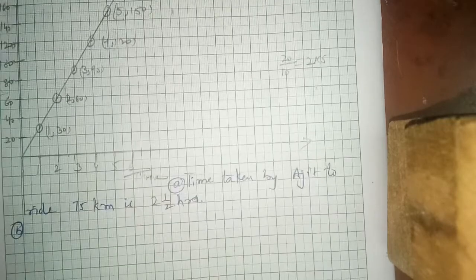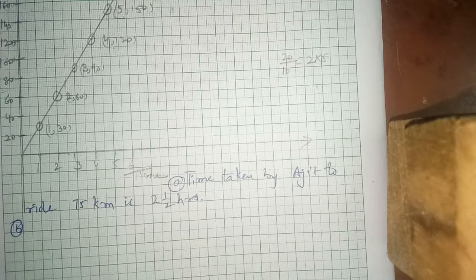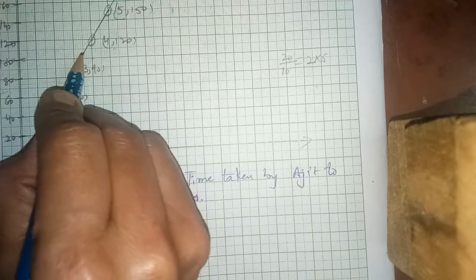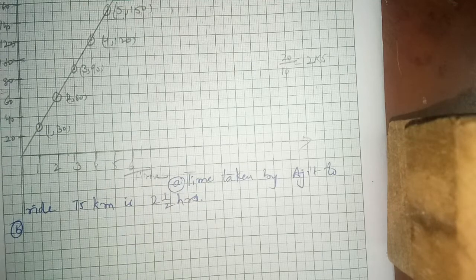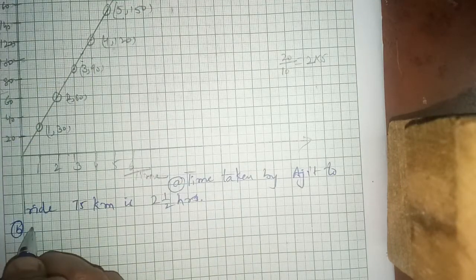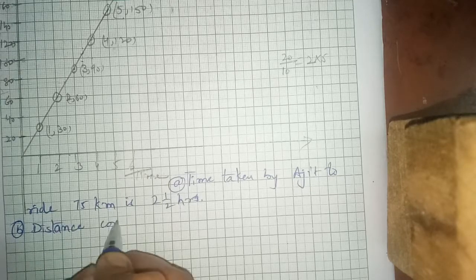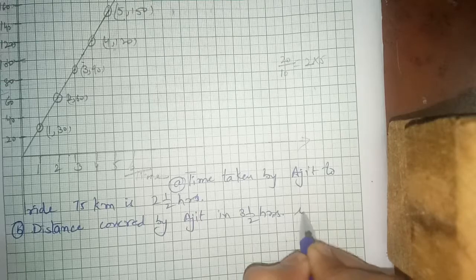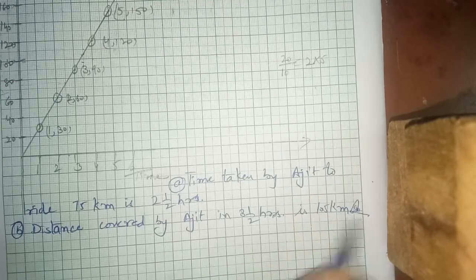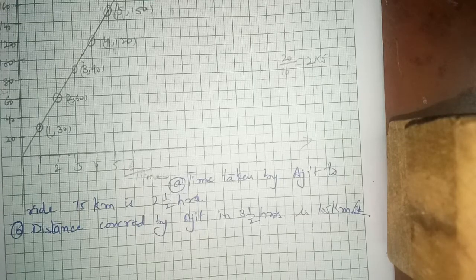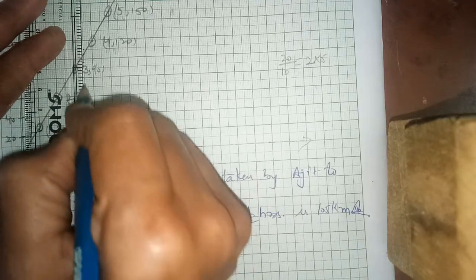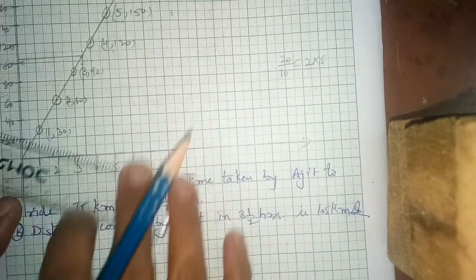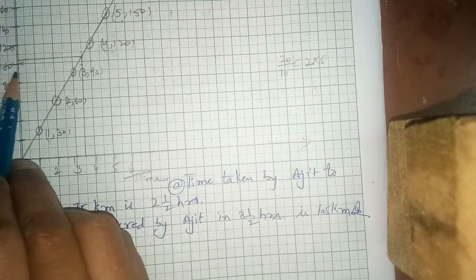For part (b): distance covered by Ajit in 3 and a half hours — 3.5 hours on the graph gives a value between 100 and 110, so approximately 105 km. The midpoint of 100 and 110 is 105. Answer: distance covered by Ajit in 3 and a half hours is 105 km. To read the graph, you can draw a vertical line up to the graph and then a horizontal parallel line across — this shows the midpoint value. Similarly, for 75 km you can adjust and read 2 and a half hours.